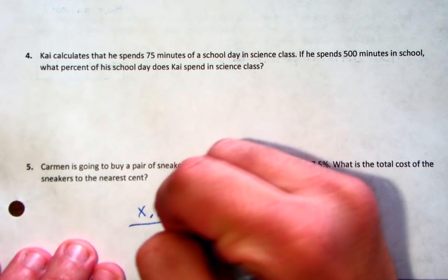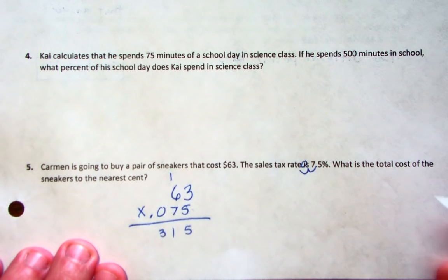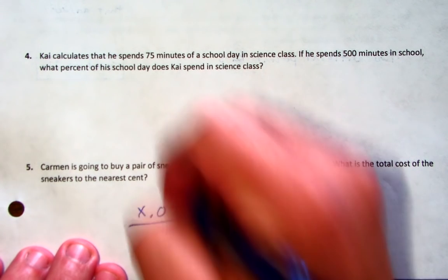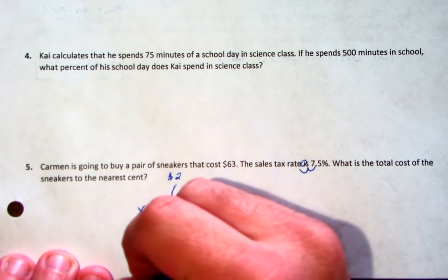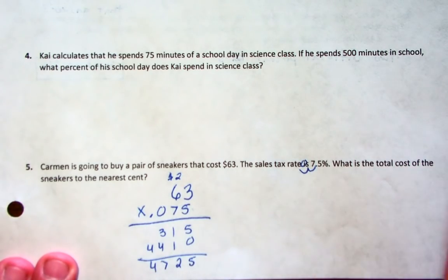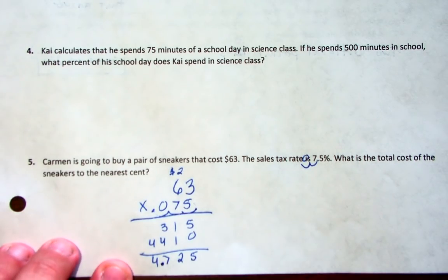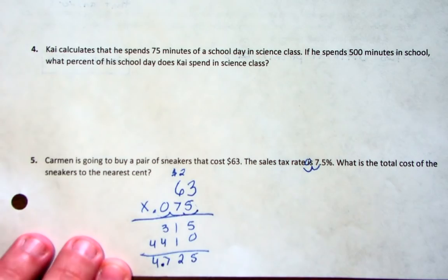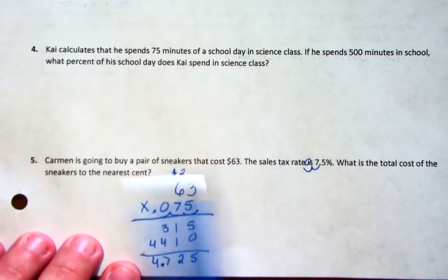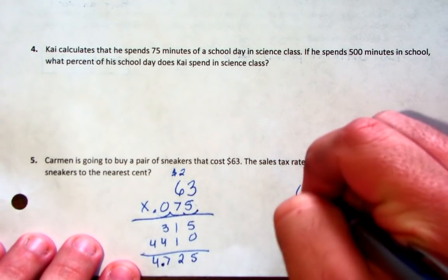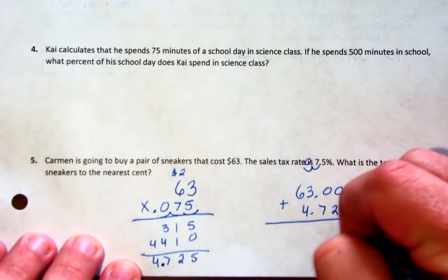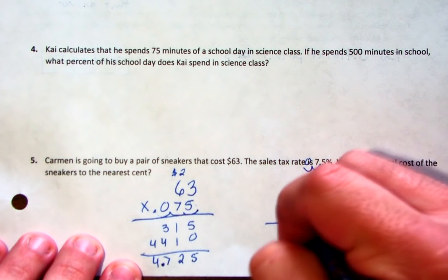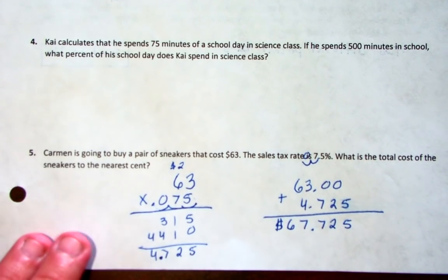So we multiply 63 by 0.075. 5 times 3 is 15, 5 times 6 is 30 plus 1 is 31. Second row, add a zero, 7 times 3 is 21, 7 times 6 is 42 plus 2 is 44. Add straight down, then move your decimal — not two places, but three places back. You get 4.725, which is how much money you're going to pay in taxes. The final step is to take the cost of the sneakers, $63, and add the tax: 63 plus 4.725 gives you $67.725.